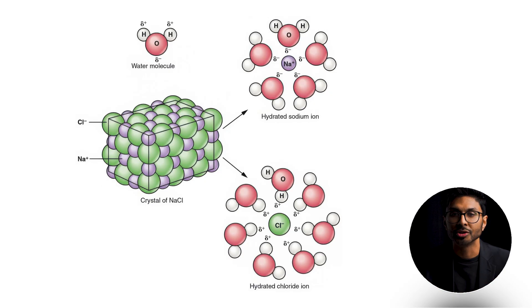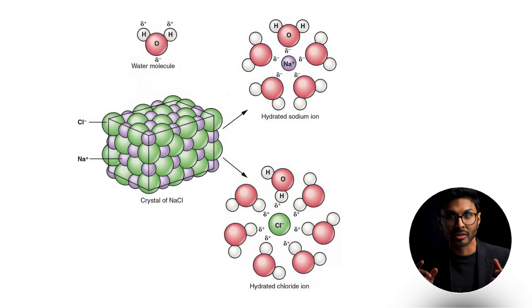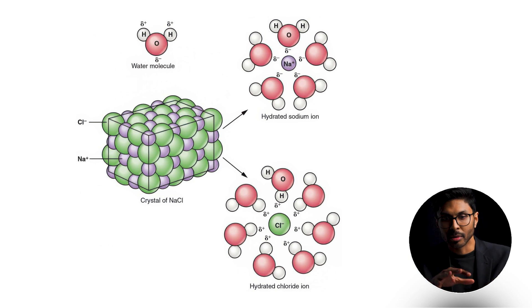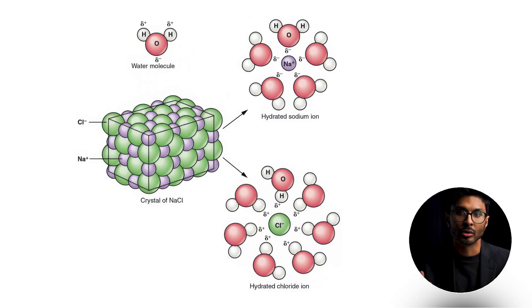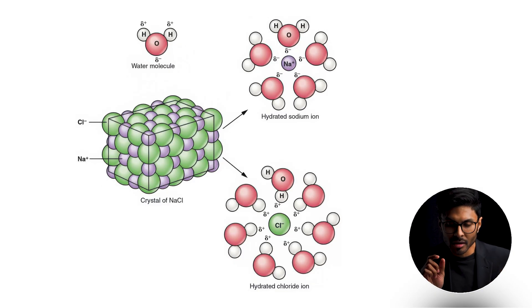In the third step, solution formation occurs: once hydrated, once these shells have been made around the ions, the ions are dispersed very evenly in the water, creating a solution. The ability of water to stabilize charged particles in this way is what makes it such an excellent solvent for ionic and polar substances. But why don't non-polar substances dissolve in water?